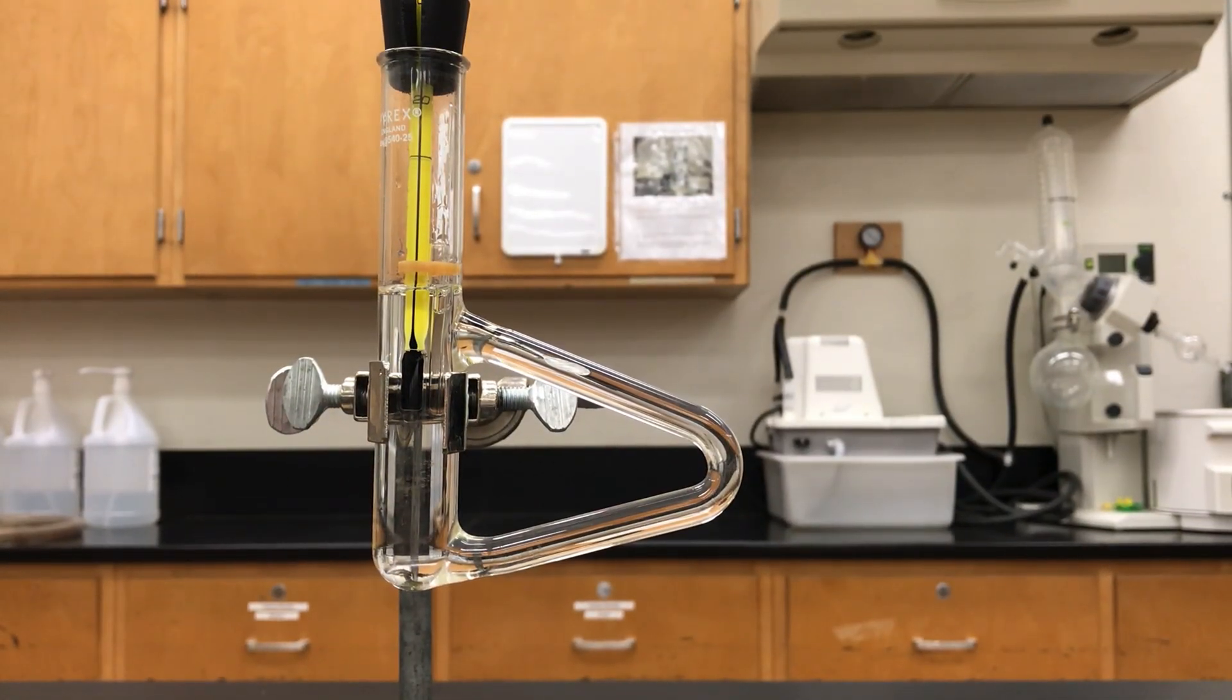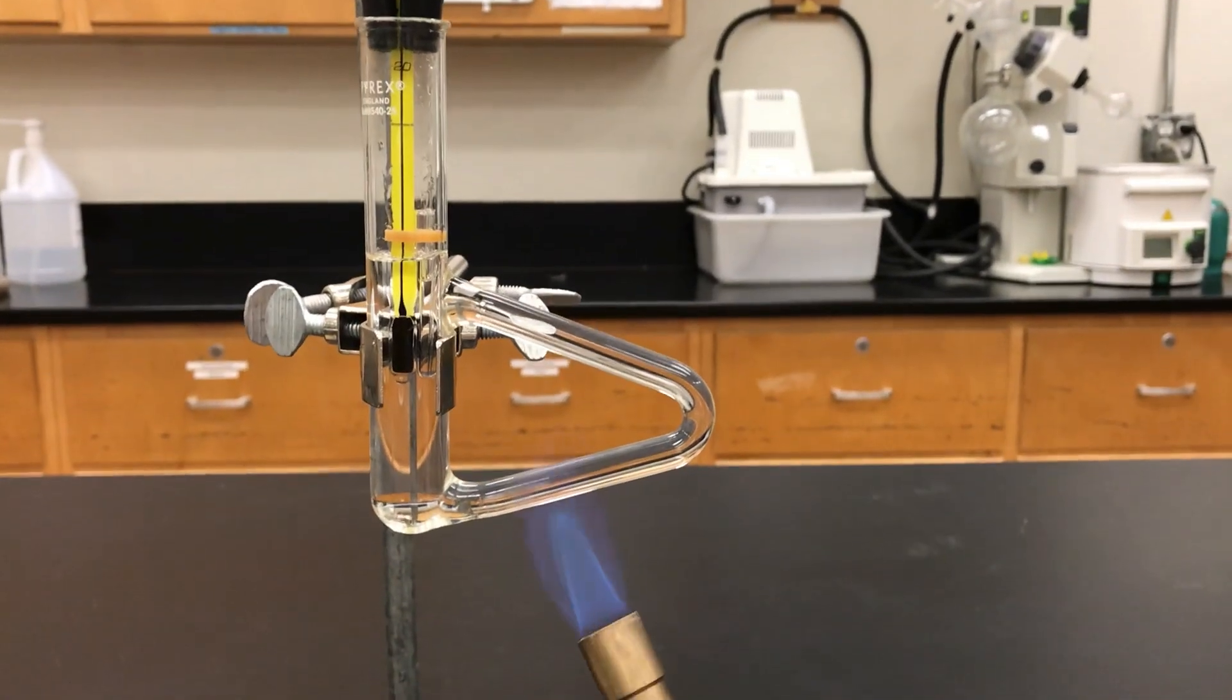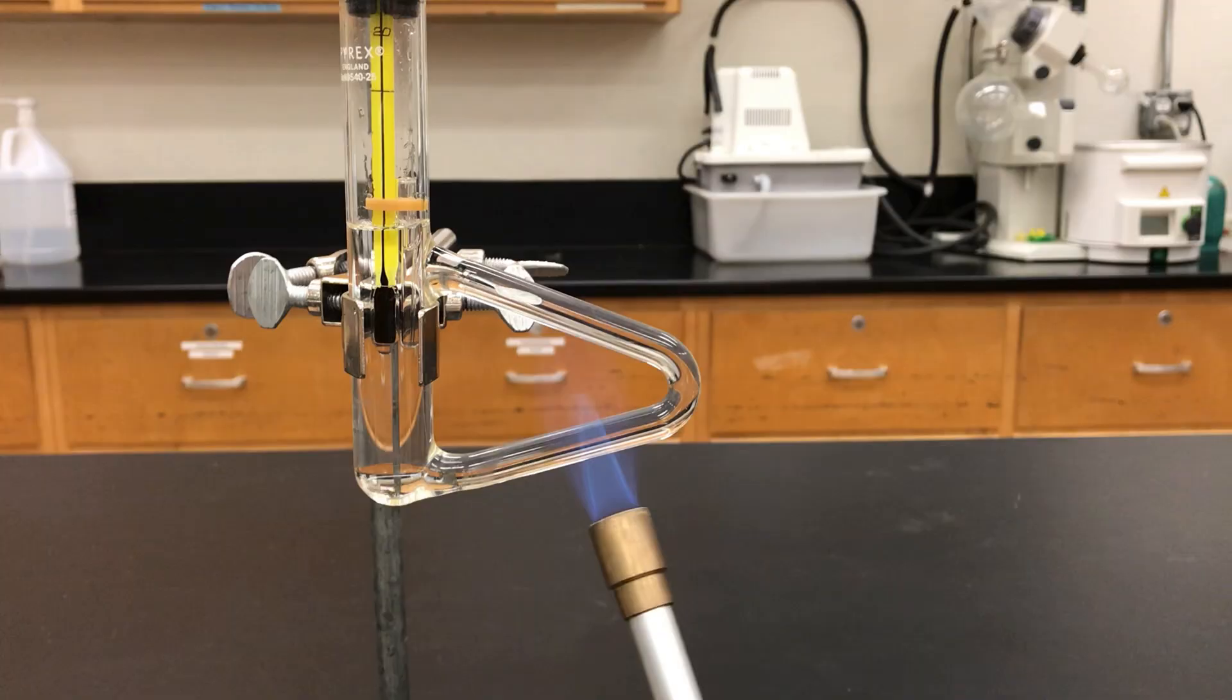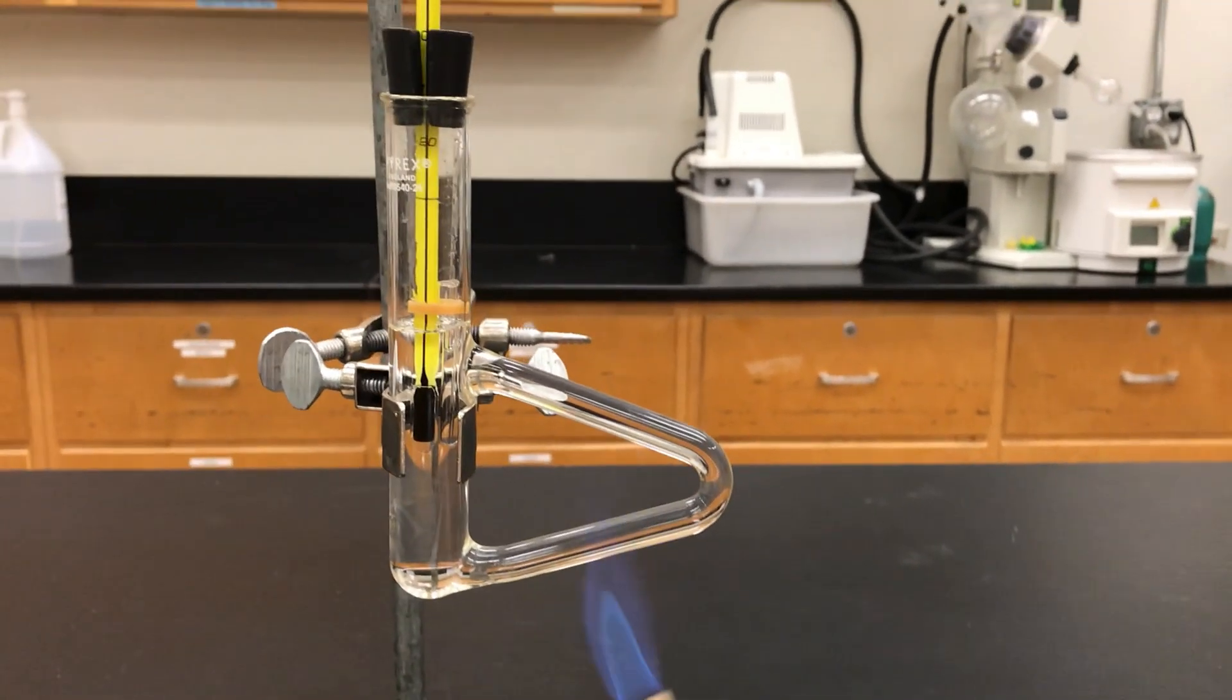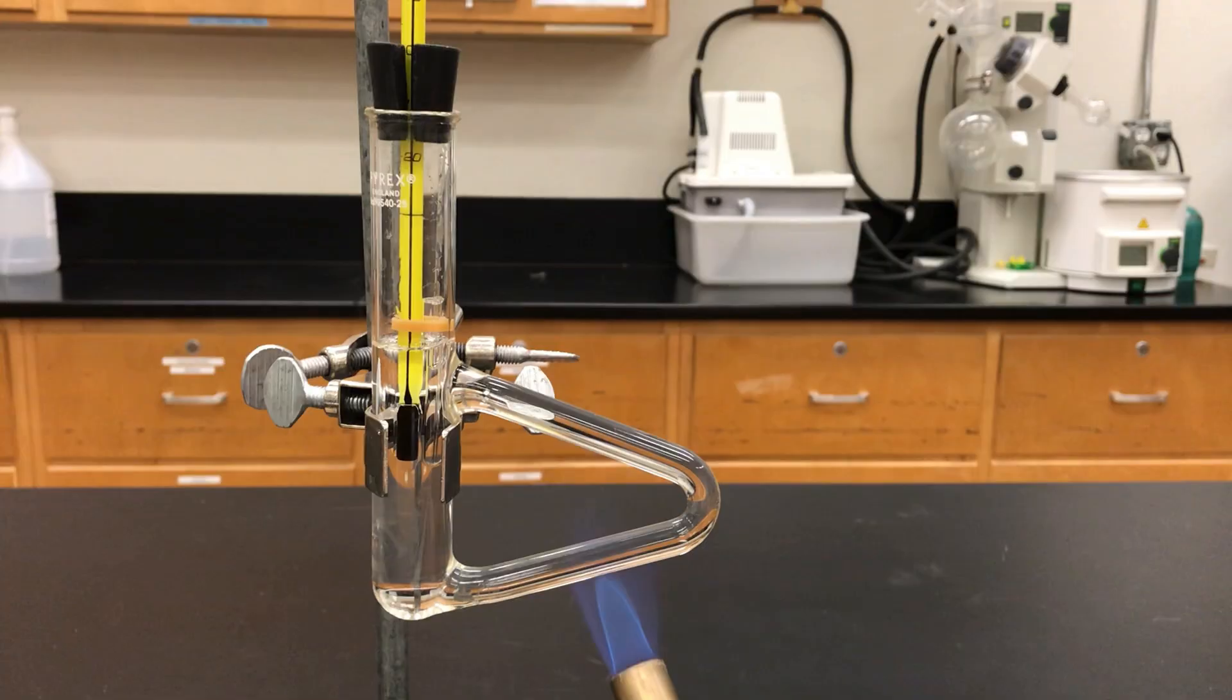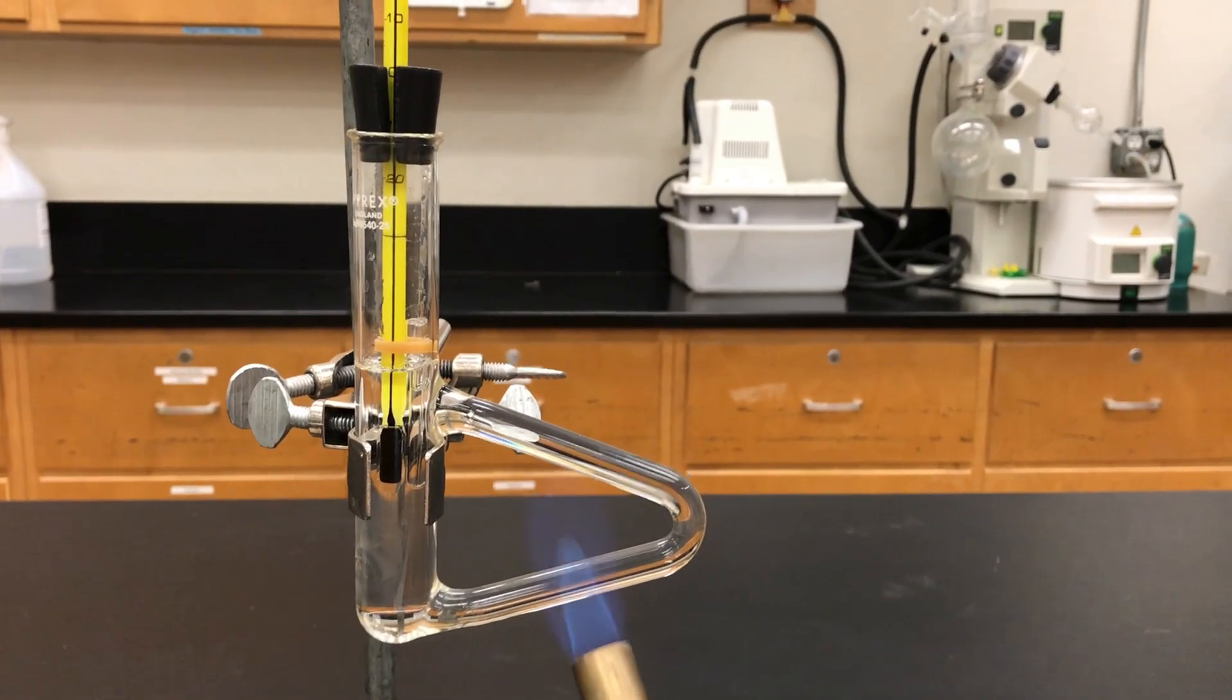Off to the side you then want to light a Bunsen burner. Bring that in and start heating the arm of the Thiele tube. This is a way to indirectly heat the sample because you'll end up creating a current within the oil. The hot oil will rise, the cooler oil will sink, and you'll create a current that eventually moves energy around and heats your sample.